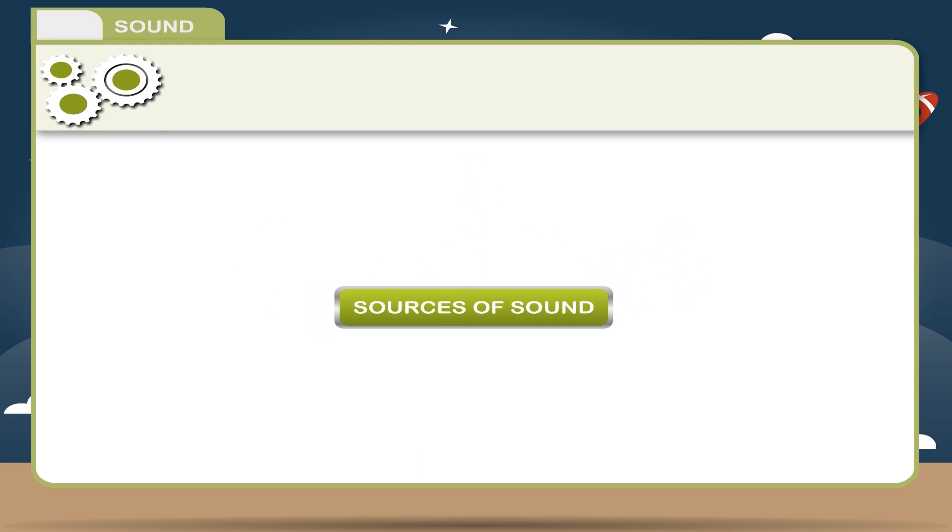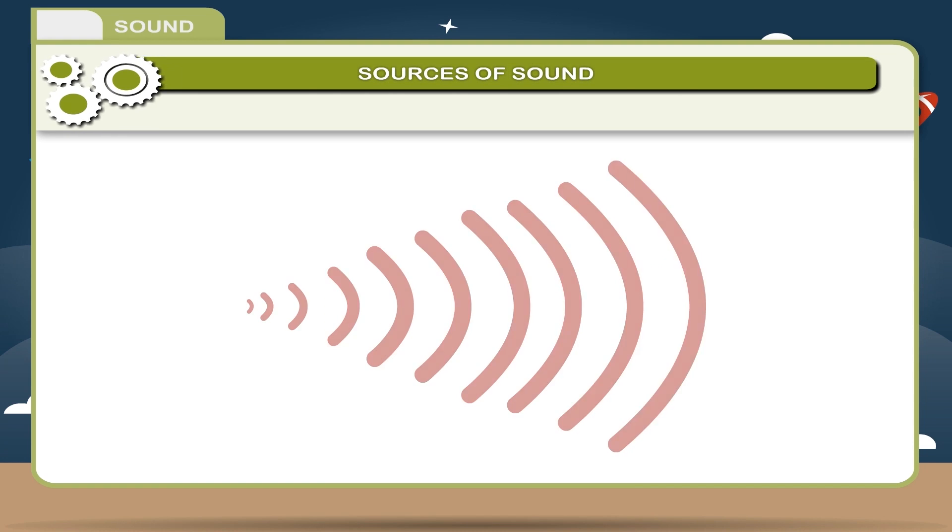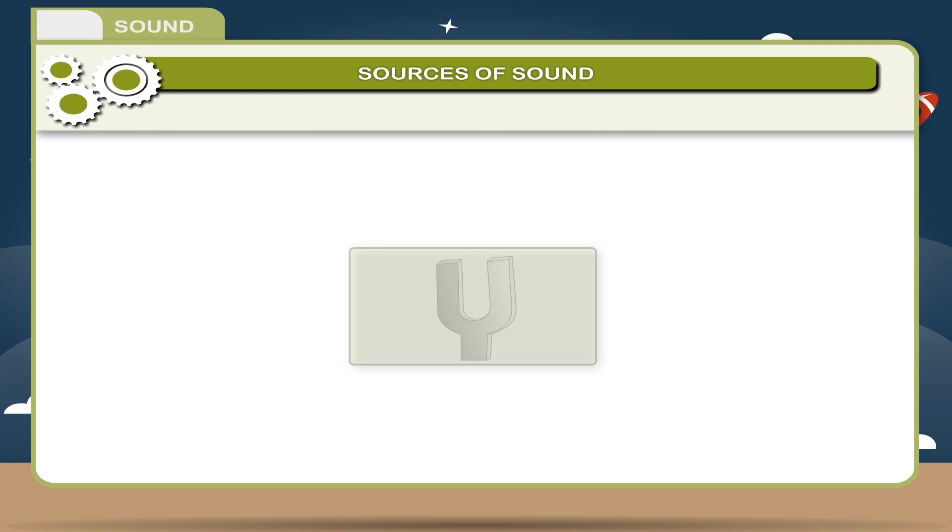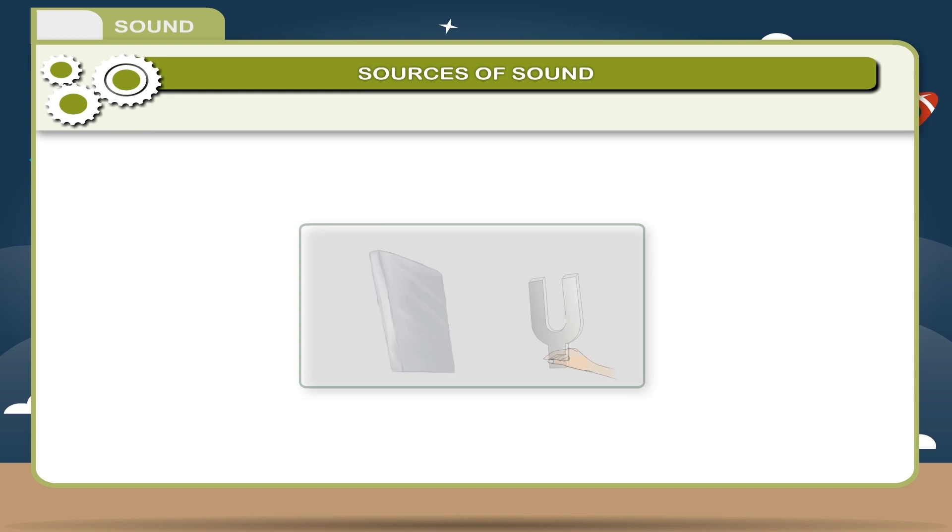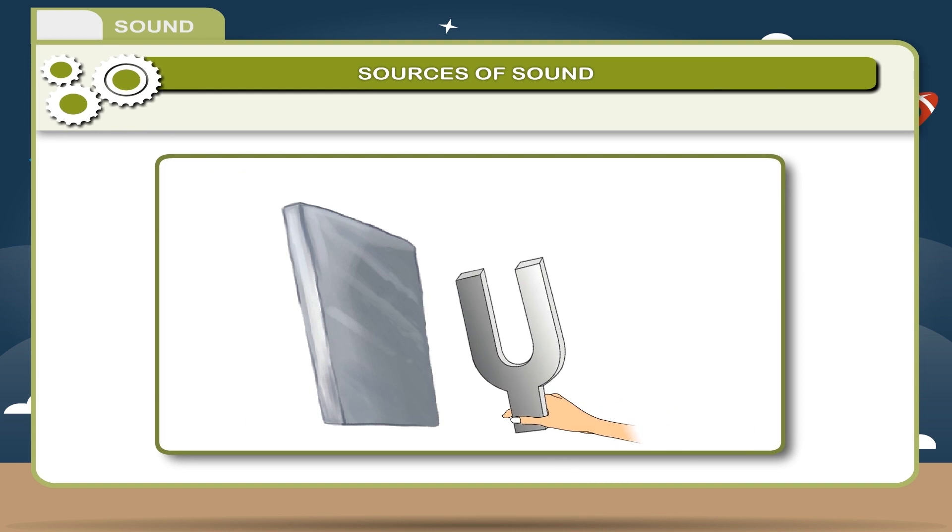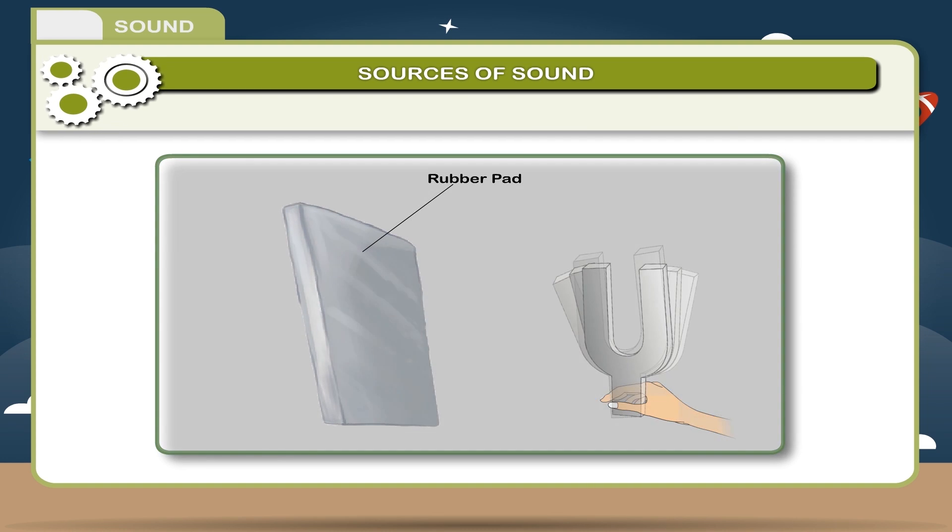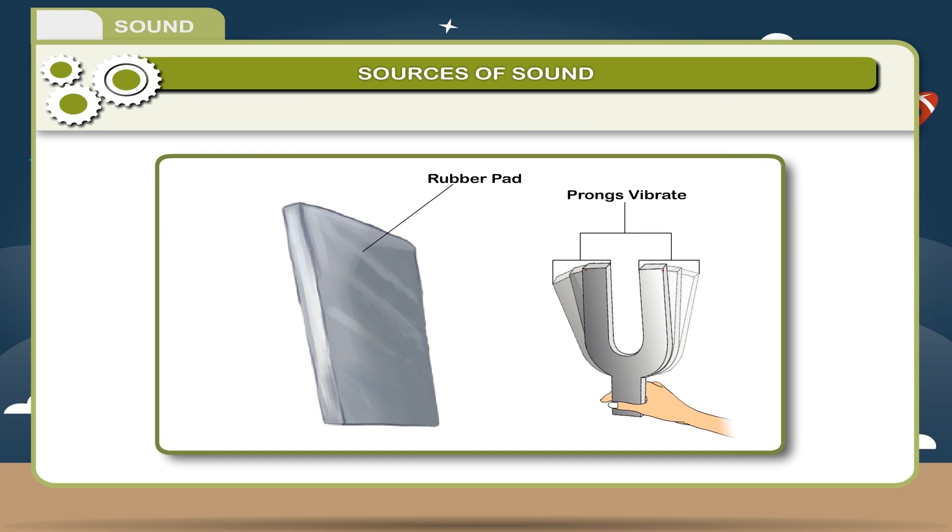Sources of Sound. The different sources of sounds are given here. Tuning Fork. It is a U-shaped metallic instrument having a stem between the two prongs. The stem is taken in the hand and the prongs are hit on the rubber pad. The prongs vibrate and produce frequency. The frequencies are written on the stem. It is used by doctors and in practical laboratories.